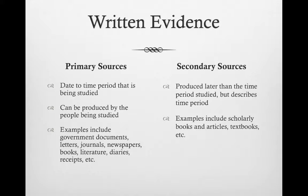The second type of written evidence is a secondary source. This is produced at a later time than the time period studied, but it describes the time period we are studying. Some examples of secondary sources include scholarly books and articles, as well as things like your textbook. The third type of written evidence, tertiary sources, will not be as useful to you. A tertiary source is just a compilation of primary and secondary sources, like an encyclopedia entry or a list, that doesn't go into very much depth.